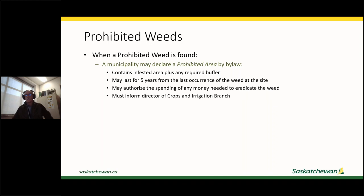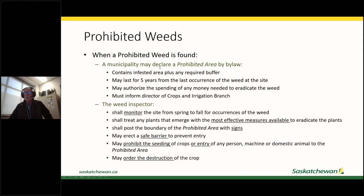The municipality can authorize spending any money needed to eradicate the weed and must inform the Director of Crops and Irrigation Branch. The weed inspector's role is to monitor the site from spring into fall, and anytime they see a plant come up, make sure it gets treated and killed so it cannot reproduce — whether by seeds, roots, rhizomes, or stolons.